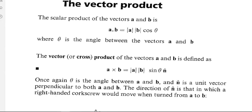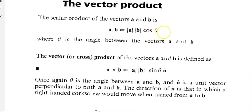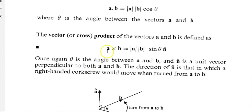Just to go over the scalar product again: a dot b equals modulus of a, modulus of b, times cos of theta, where theta is the angle between a and b. The vector product — another way of saying it — is the cross product.